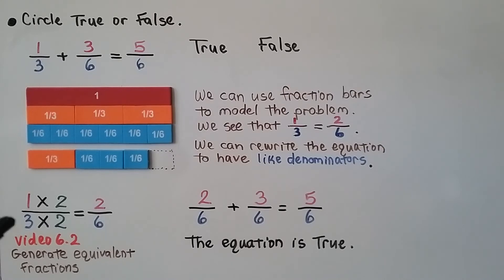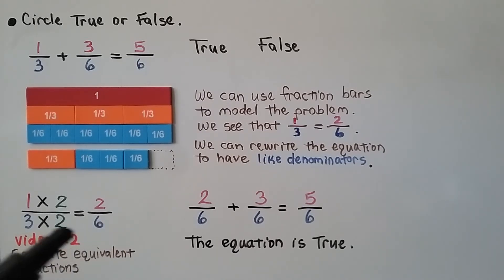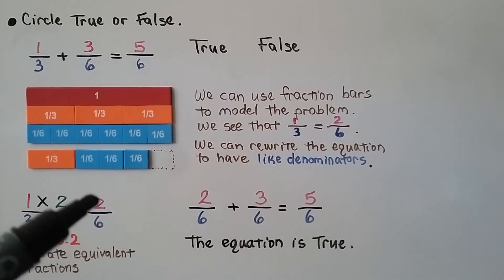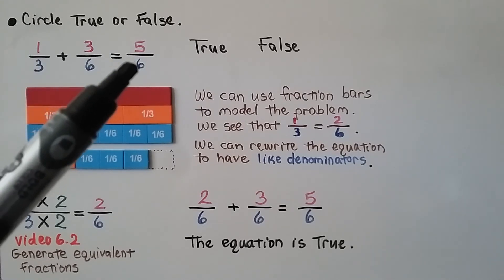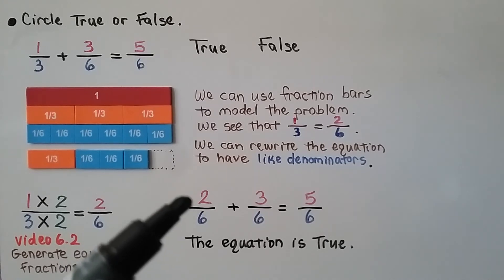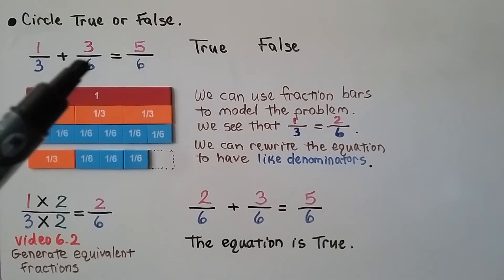We also learned in video 6.2, linked in the description, how to generate equivalent fractions. We have one-third and want to give it a six for a denominator: three times what number equals six? That's two. The numerator also gets multiplied by two: one times two is two, three times two is six, giving us two-sixths. Then we add it to three-sixths. So is one-third plus three-sixths equal to five-sixths? Yes — the equation is true.